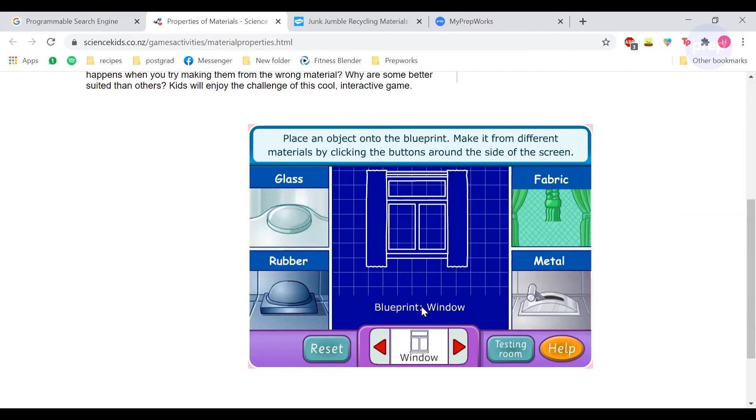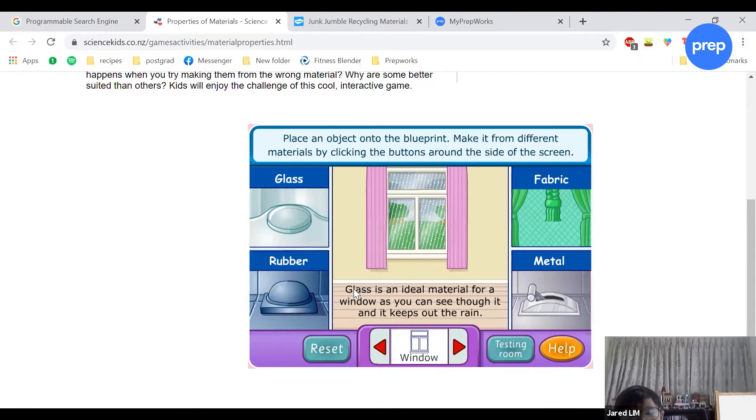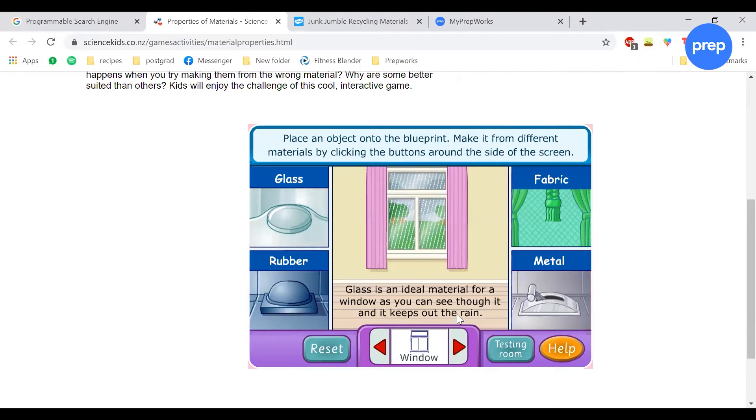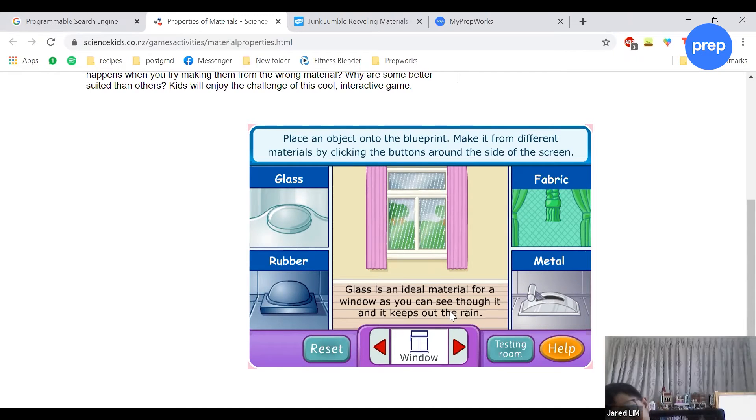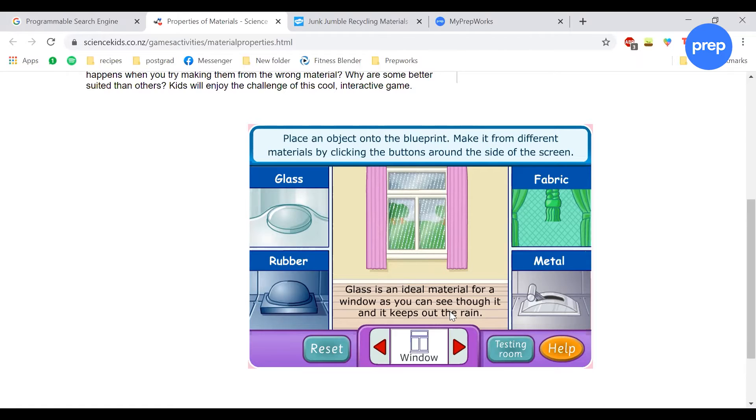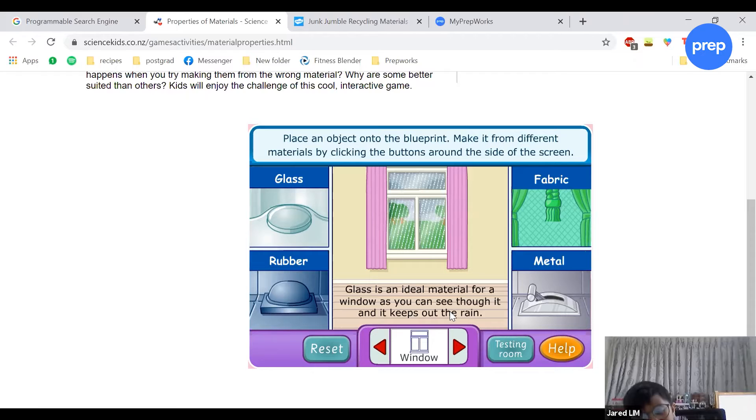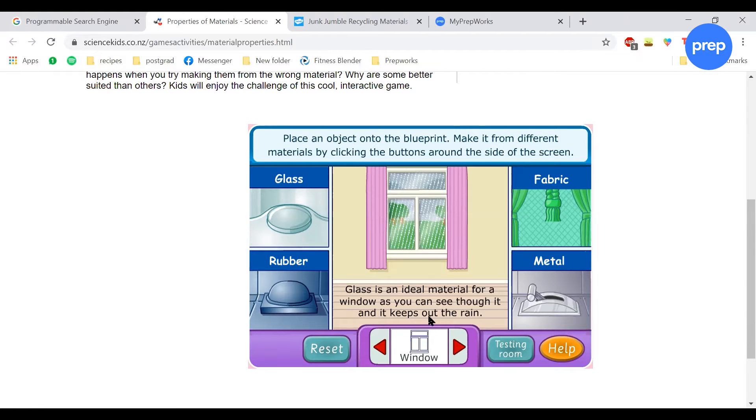Okay, let's try a window. What should I make a window out of? Glass. Glass is an ideal material because you can see and it keeps out the rain. So what is the see-through property? What is the word that I taught you? Transparent. Yeah, very good. Transparent. So glass is transparent, which means you can see